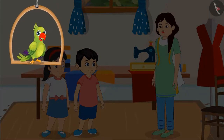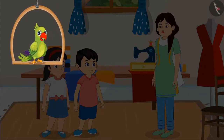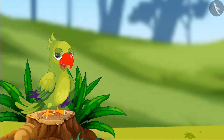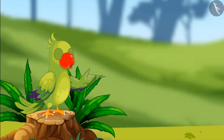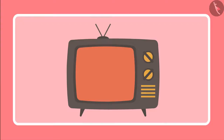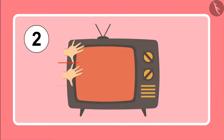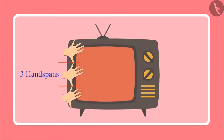So did you see children? To know the length of an object, we measure it. In this video, we measured objects using handspans. Just like the width of this TV — one, two, three — three handspans wide.